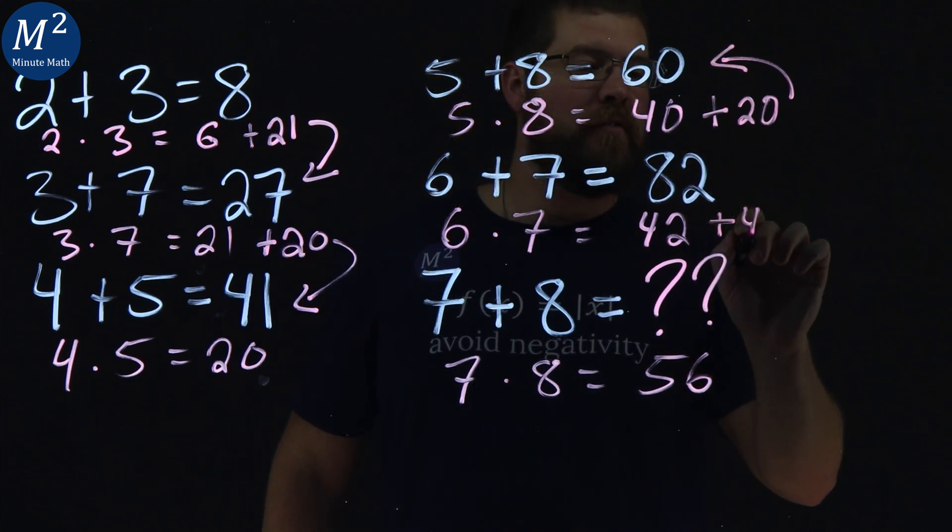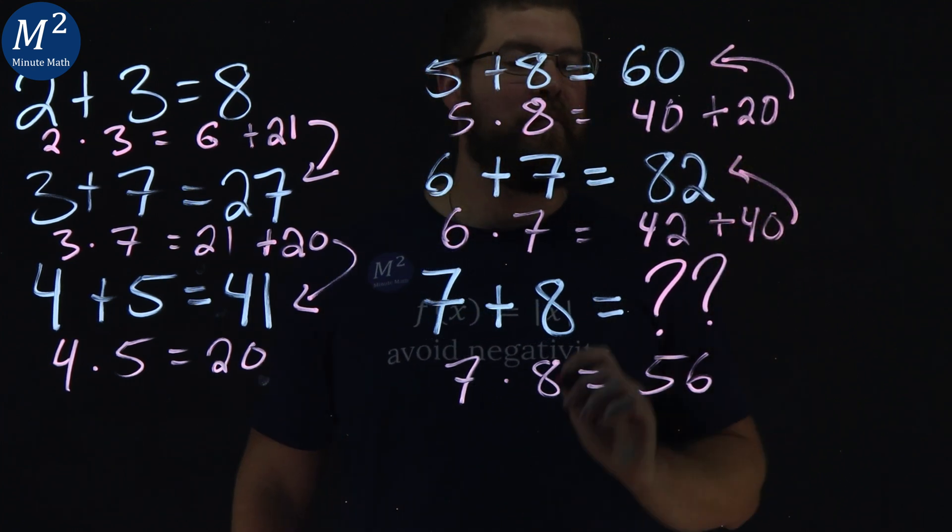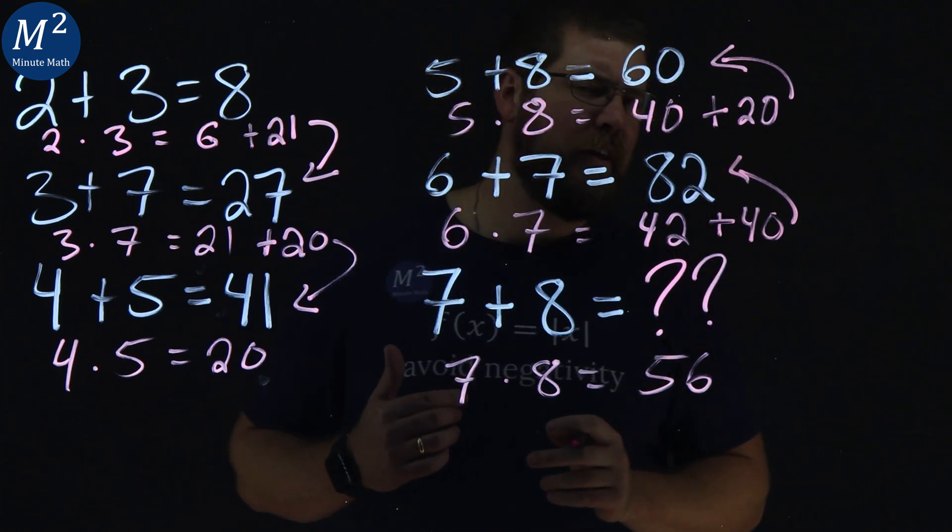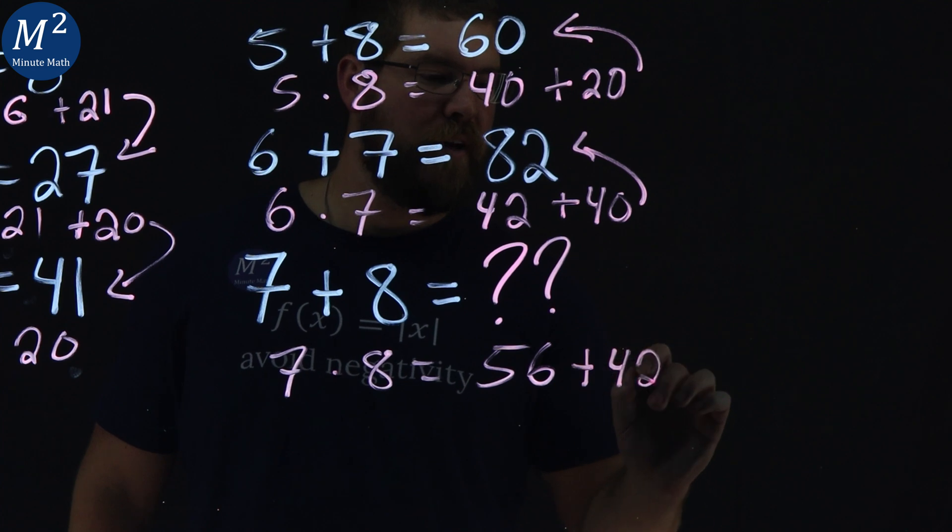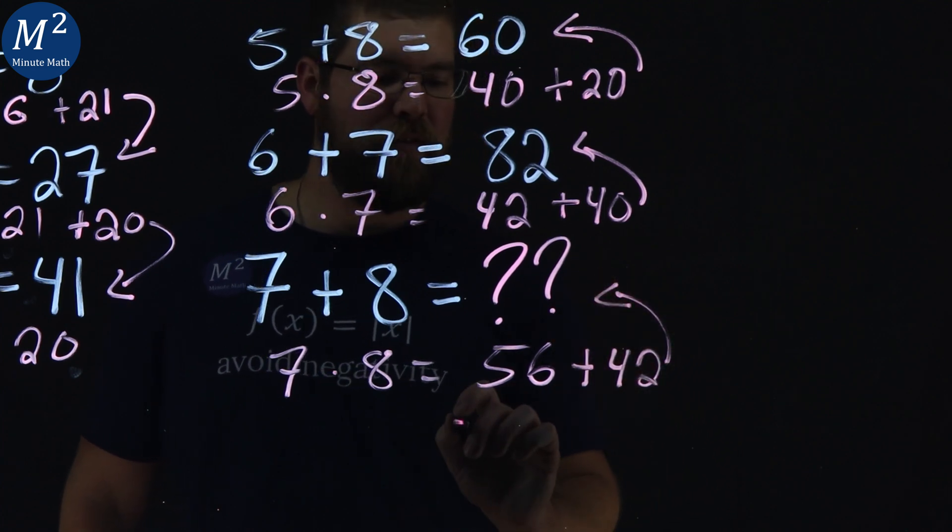40 plus 42 gives me 82, so I think we have an answer. 56 plus 42 is going to give me whatever that answer is.